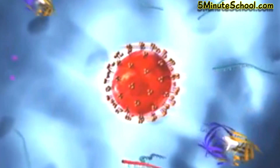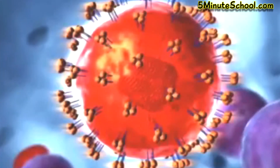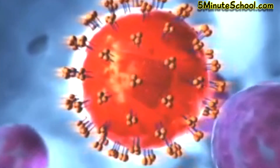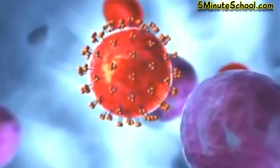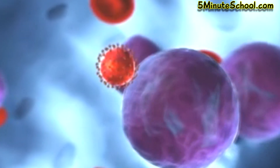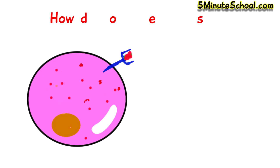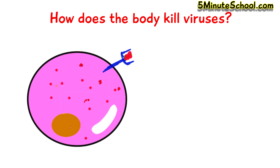In the last video we spoke about the basic structure of a virus, and in this video I want to talk about what the body does in order to combat a viral infection. There are four main mechanisms the body uses to kill viruses. The first one is with cytotoxic cells.